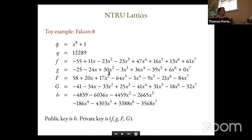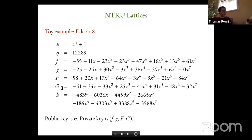Here is a toy example, reducing the degree to eight just so it fits on slides. When you reduce the degree, the coefficients of F and G can become a bit larger — that's why we see things like minus 55, which is definitely larger than 20. Anyway, here is a small polynomial F and G, and a solution to the NTRU equation with big F and big G. The solution to the NTRU equation is usually not unique — there may be several choices — but we don't really care which one we get; any is fine.